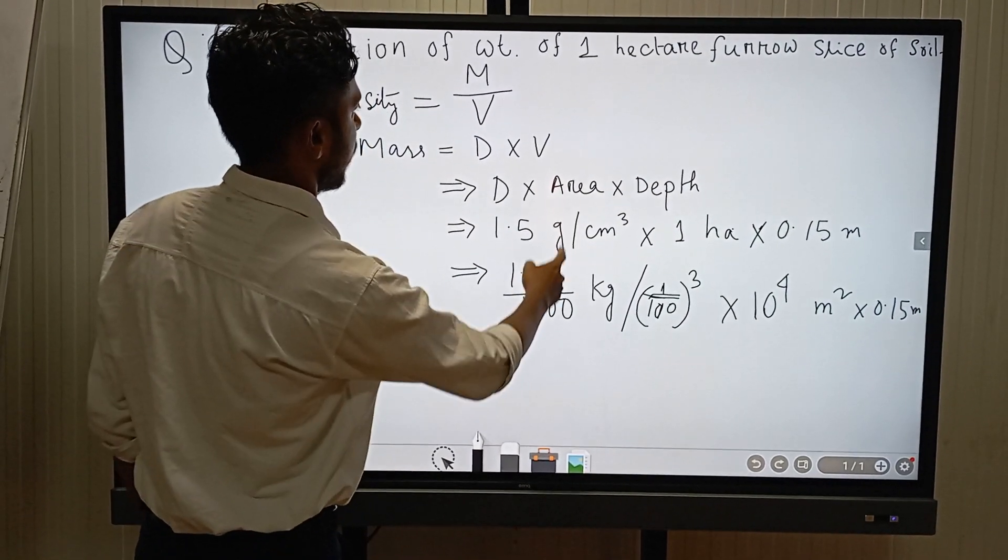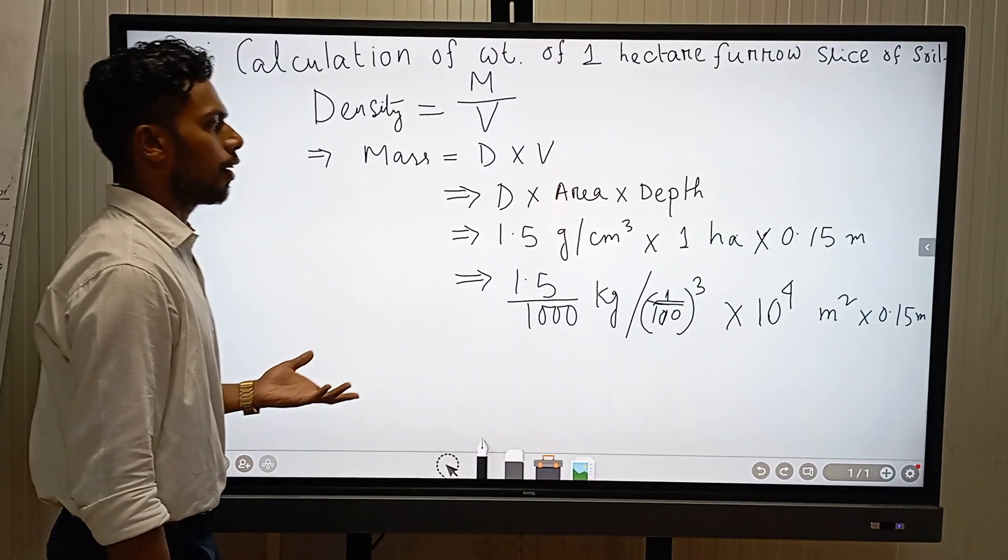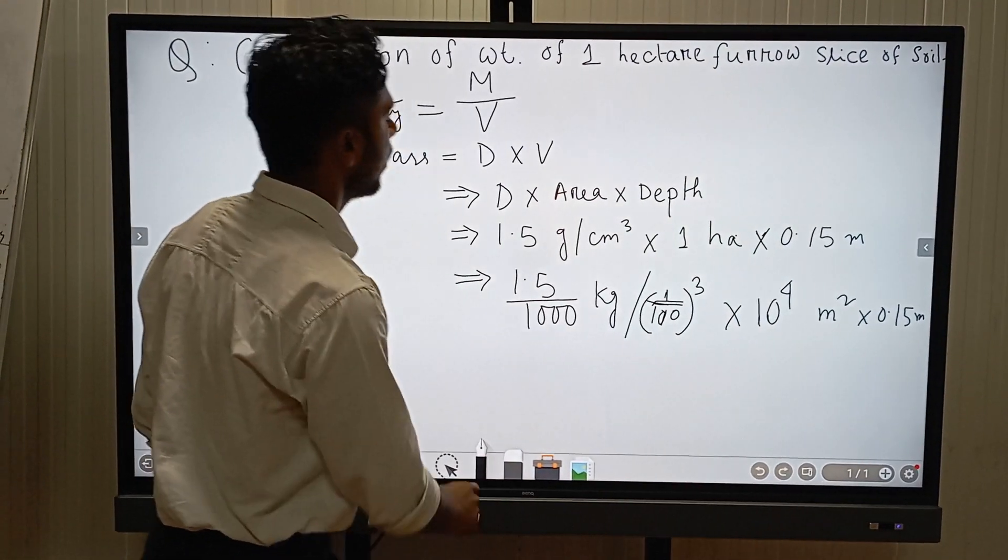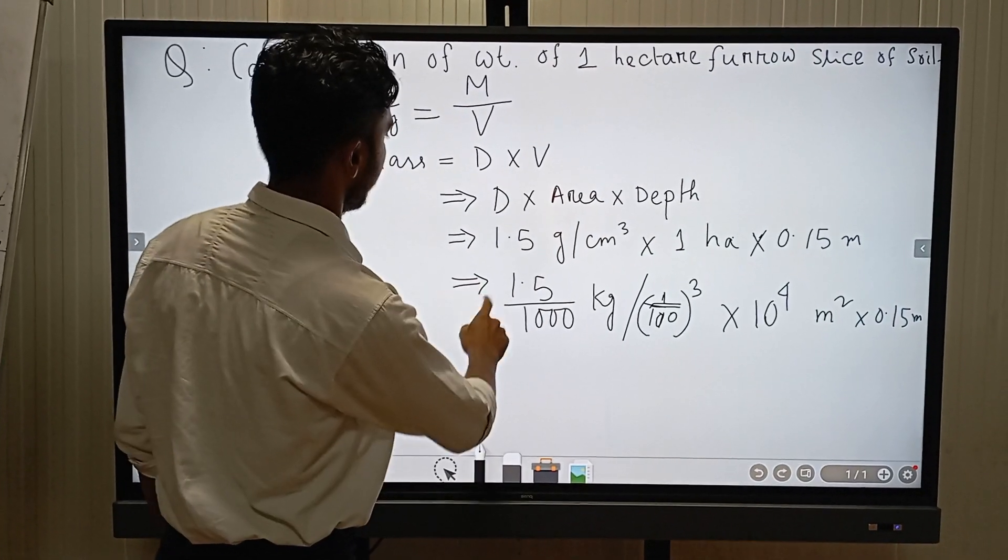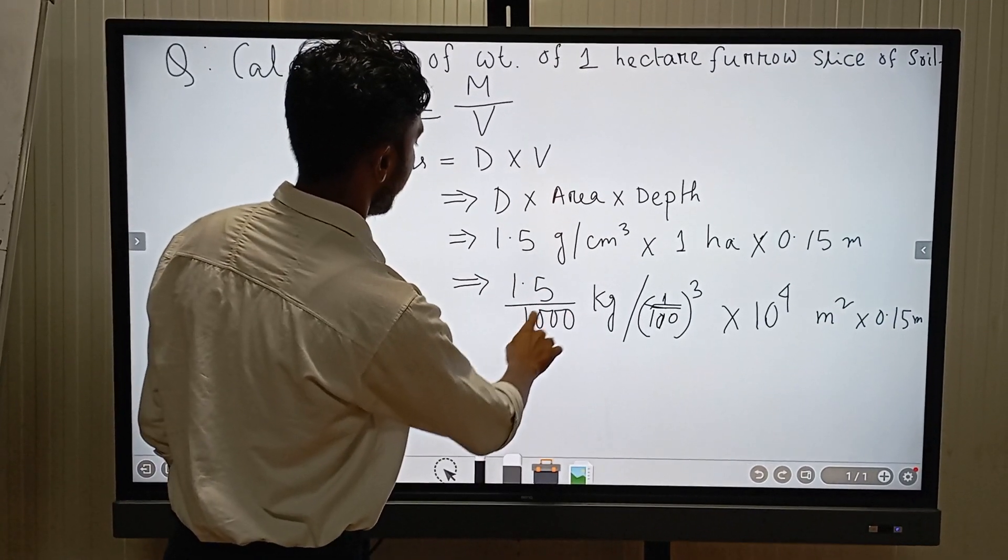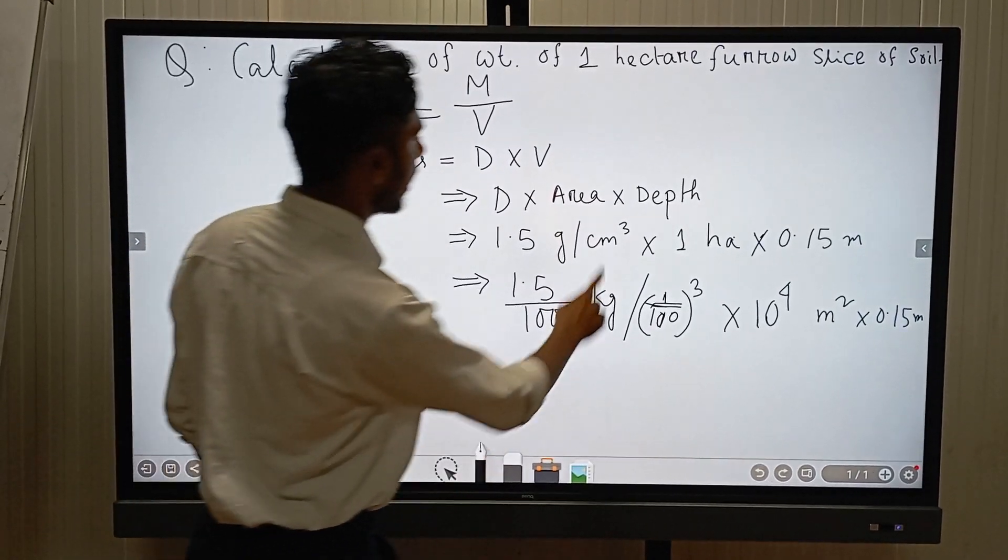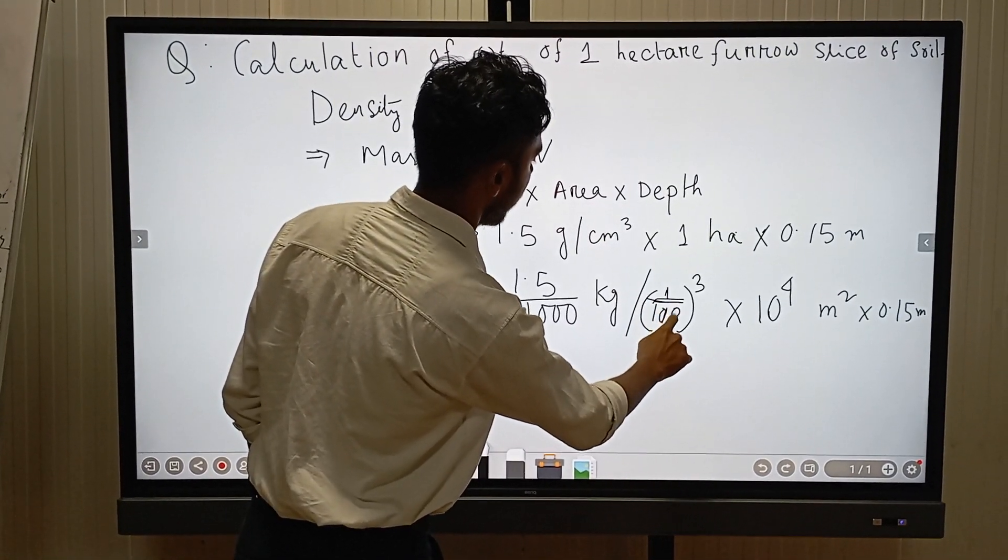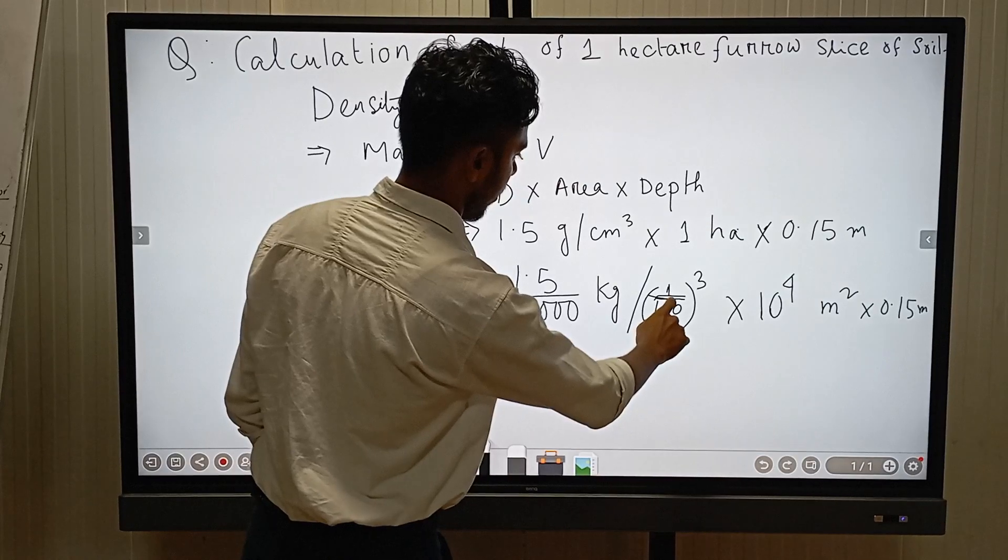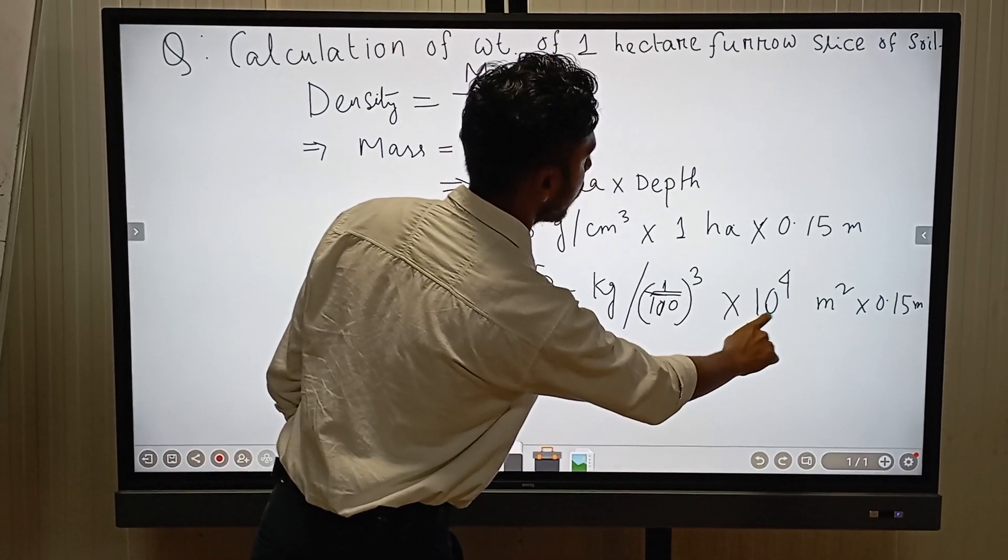For making the units similar, either in kg or SI units or whatever may be, we have to convert. So 1.5 divided by 1000 converts grams to kg. And centimeter can be converted into meter - 1 cm equals 1 by 100 meter, so it should be cubed.